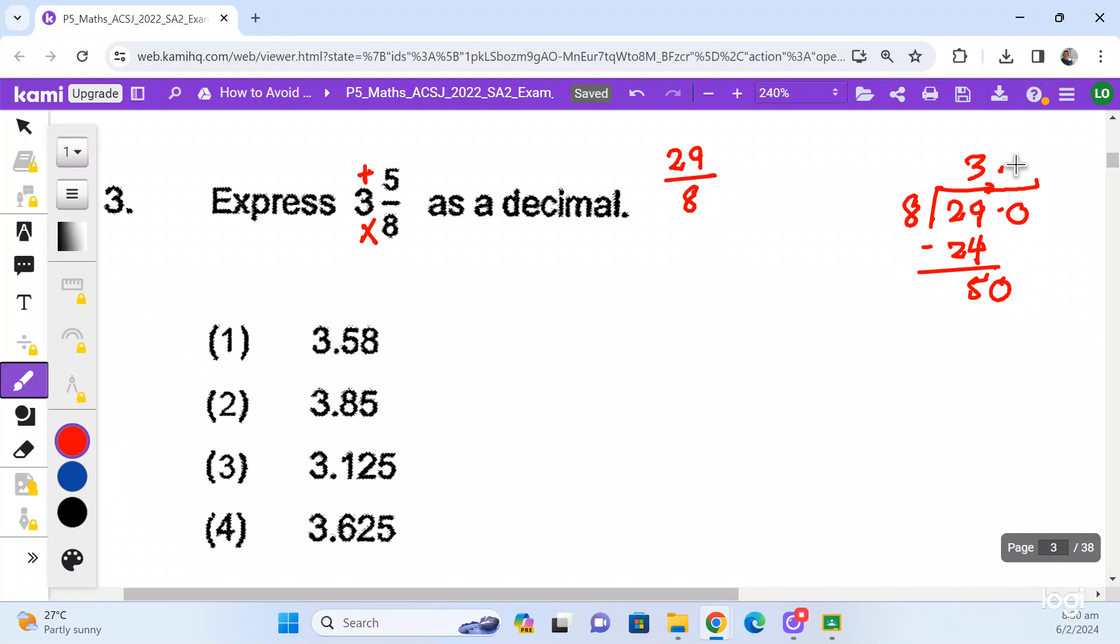You have what times 8 equals 50? So there will be 6. 6 times 8 will be 48. There is another remainder, so you add one more 0, pull the 0 down and continue. 2 times 8 equals 16, still another remainder. Add one more 0, pull it down, and then 5 times 8 is 40. Finally, you get your answer 3.625, which is number 4.